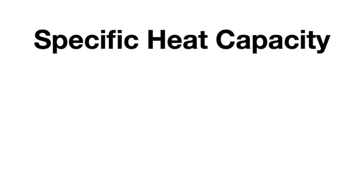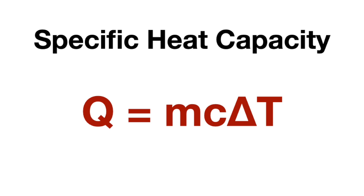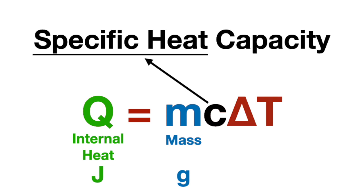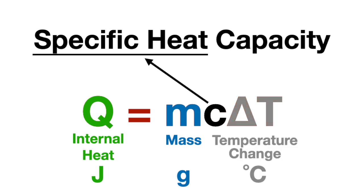We'll also be using a very familiar formula — the heat capacity formula — to help demonstrate specific heat. Q is the internal energy of a substance or object measured in joules, M is the mass measured in grams, C is the specific heat, and delta T is the change in temperature measured in degrees Celsius.